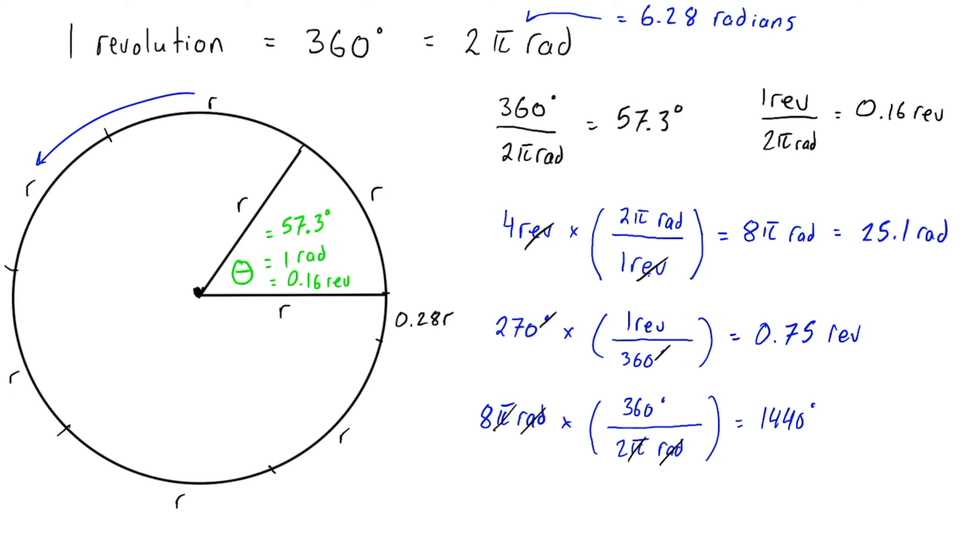For those that are familiar with sports like snowboarding or skiing or something where people are spinning a bunch, 1440 degrees represents four spins, which is exactly what it was up here—8π radians, four revolutions.